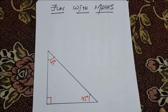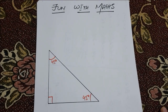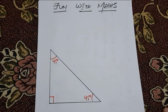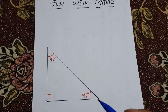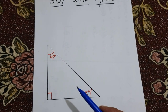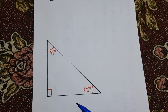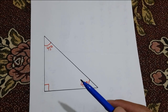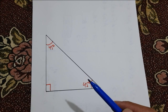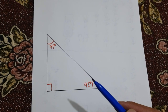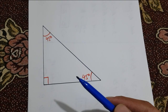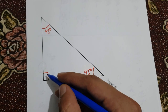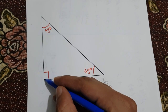Today I am going to have a little fun with an isosceles right triangle. An isosceles right triangle means a right triangle having two acute angles each of 45 degrees. Considering that, we bisect the angle of 90 degrees.